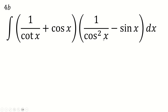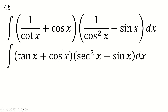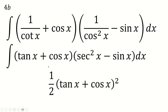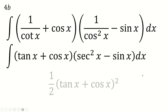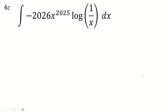Write 1 over cot as tan and 1 over cos squared as sec squared. Then notice that this bracket perfectly differentiates into the other bracket, so the answer is one half of the bracket squared. Again, easy to spot as long as you don't expand it out — which is exactly what the trick is helping you avoid.